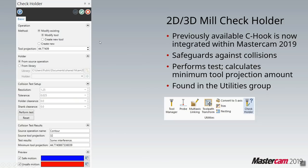Let's talk about the ability to check the holder. You could check the holder in 2018 as a C hook, but now it's integrated into the Mastercam interface under utilities as 'check holder.' It looks at the selected tool and operations, calculates the tool projection, and lets you modify that accordingly.